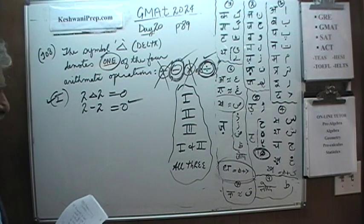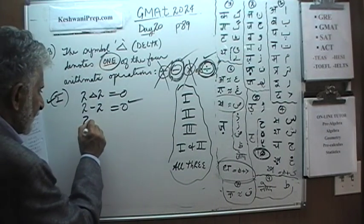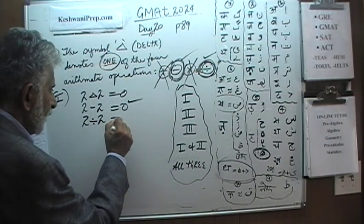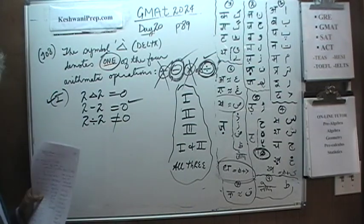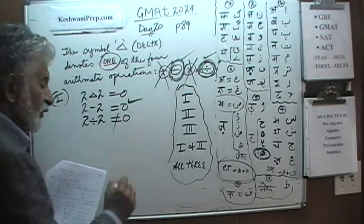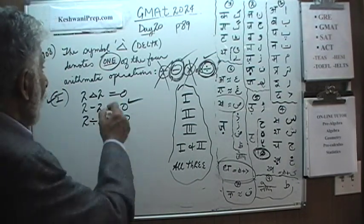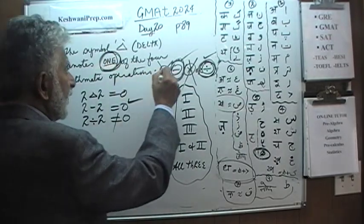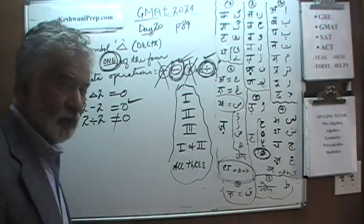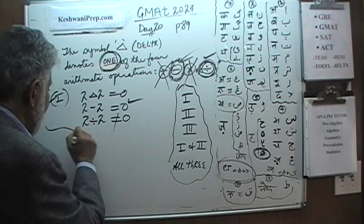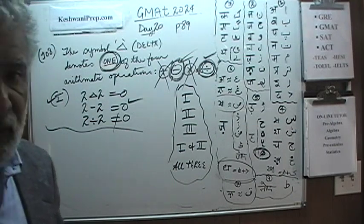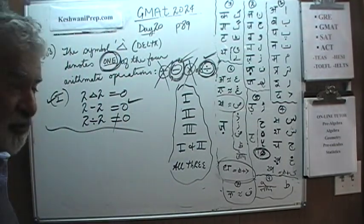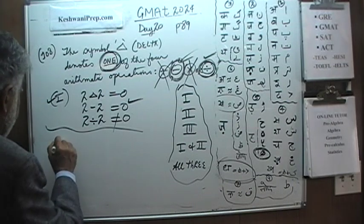The first statement says 2 delta 2 equals 0. We only have to try the subtraction and division. 2 minus 2 is equal to 0. So that is true. Which means first statement may be true. As you can see it does not work for the second one. 2 divided by 2 does not equal 0. But it does work for subtraction.